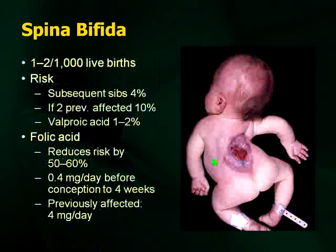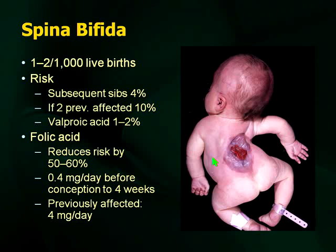Moving on with spina bifida — it's a relatively common congenital anomaly that you'll see frequently in your pediatric practice. For examinations, there will be questions about recurrence risk and how to counsel families. Remember there is an increased risk with subsequent siblings of 4% — you go from 0.1% to 4% in subsequent siblings. If you have two previously affected siblings, the risk is 10%. One of the drugs we love to hate is valproic acid, and it is associated with neural tube defects — a very common thing examiners like to ask about.